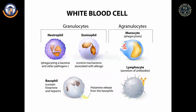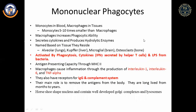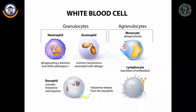White blood cells may be granulated or agranulated. Granulocytes — neutrophils, eosinophils, and basophils — contain granules. Agranulocytes are monocytes and lymphocytes, which include B and T lymphocytes. Mononuclear phagocytes: monocytes have a single nucleus. Monocytes are produced in blood and when they reach tissues, they convert into macrophages, which are five to ten times larger.